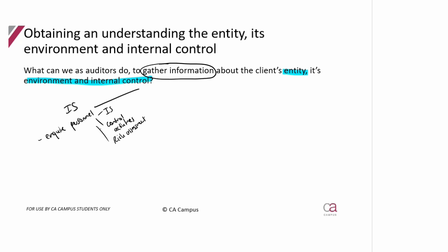That would be your normal people in the business. But what about management? So we can inquire with management and those charged with governance of the business so that we can understand a little bit more about the control environment, because they're the ones responsible for that. Or we can inspect a code of conduct to understand the control environment — is there a code of conduct telling staff how they are expected to behave in order for controls to operate effectively in this business?